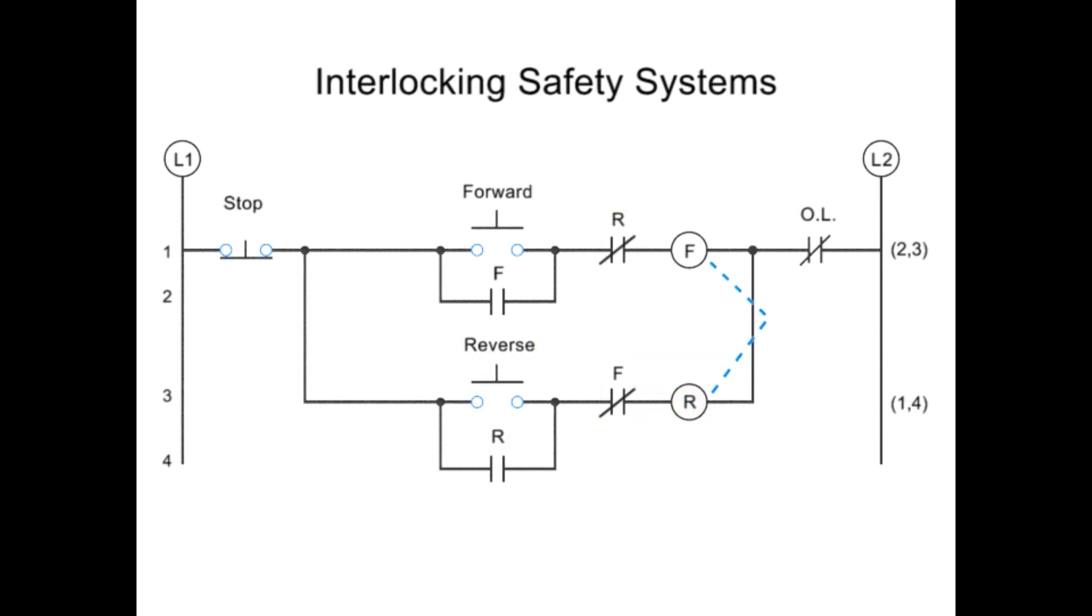The final level of protection is the push-button interlock. This interlocking system works by physically opening the button contact within the opposing circuit. This way, if for some reason both buttons get pushed, then no current will flow at all.